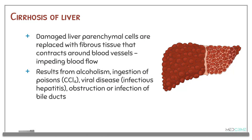One of the most common conditions affecting the liver is cirrhosis of the liver. The damaged liver parenchyma cells are replaced with fibrous tissue that contracts around blood vessels, impairing blood flow. This results from alcoholism, ingestion of poisons, viral diseases such as infectious hepatitis, and also obstruction or infection of the bile ducts.